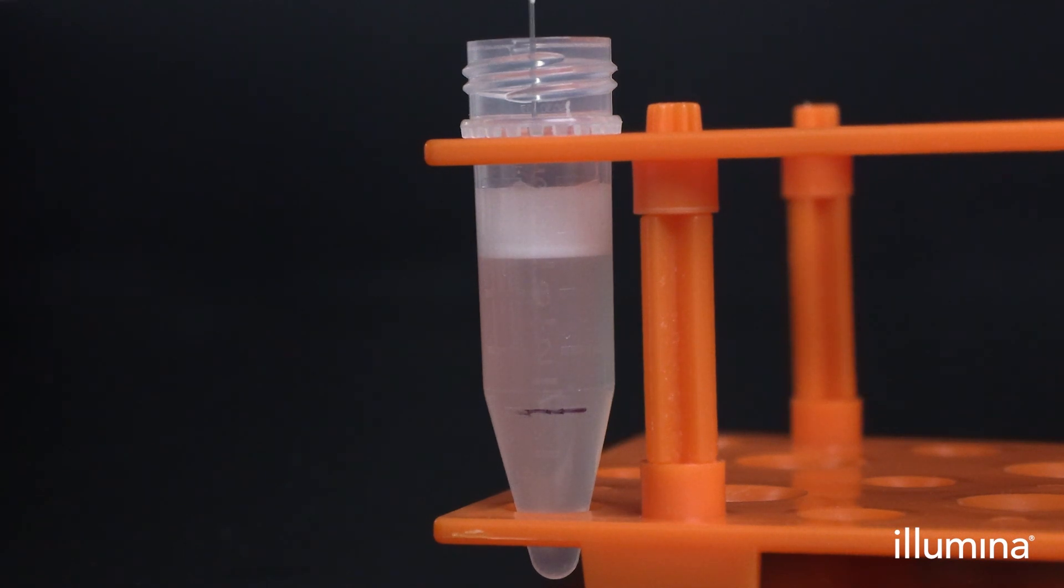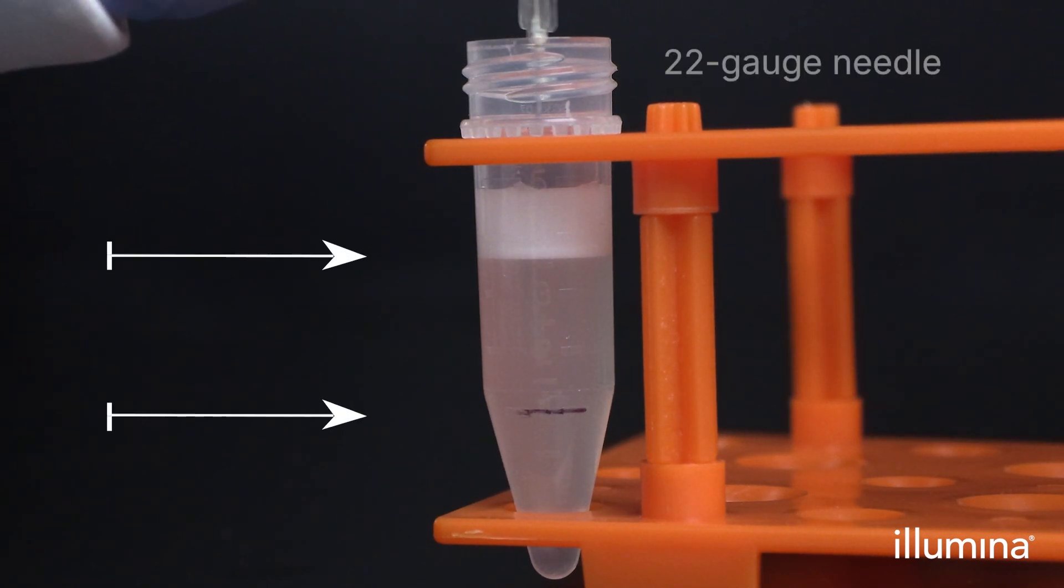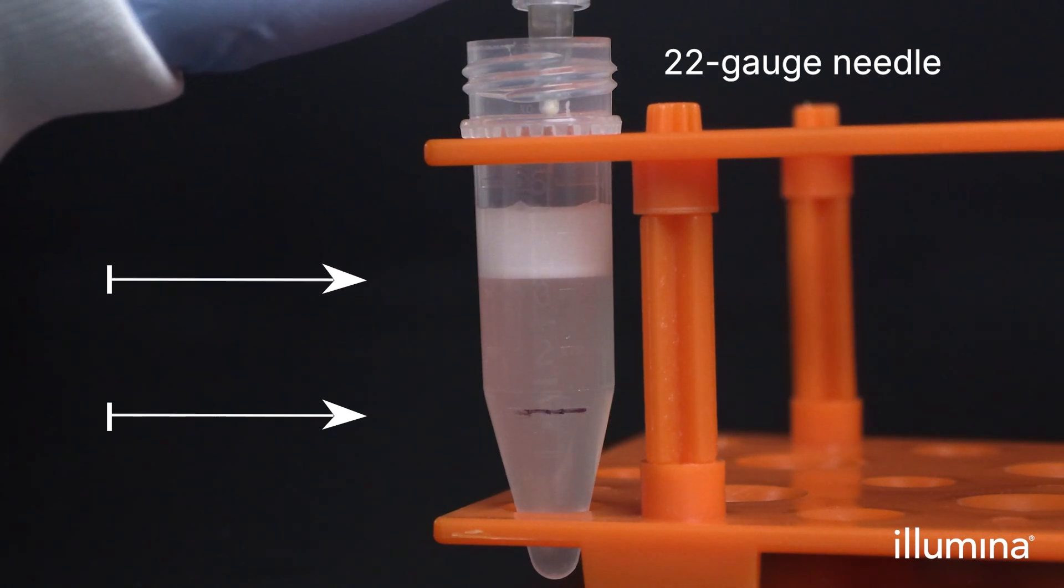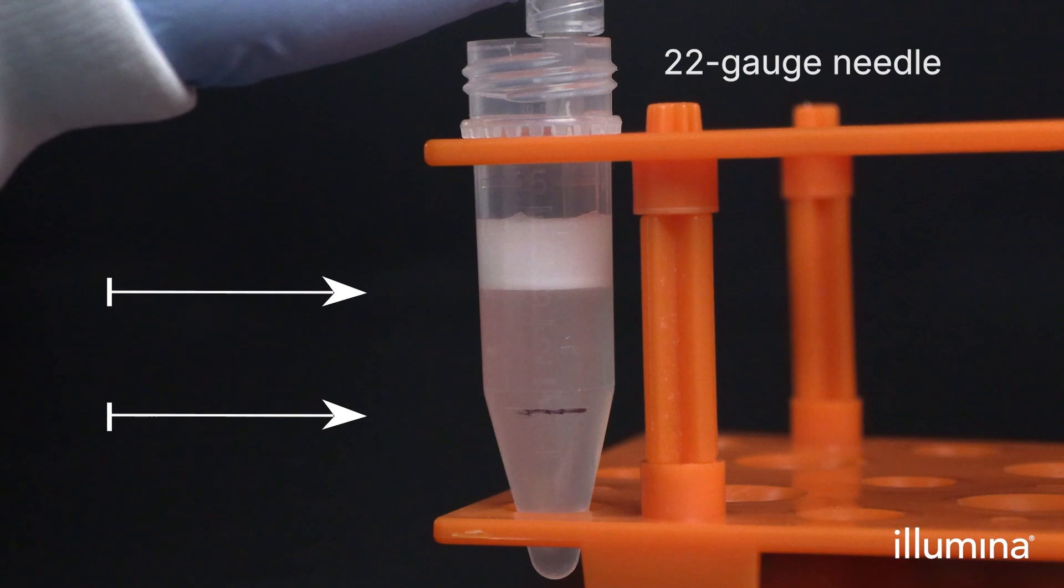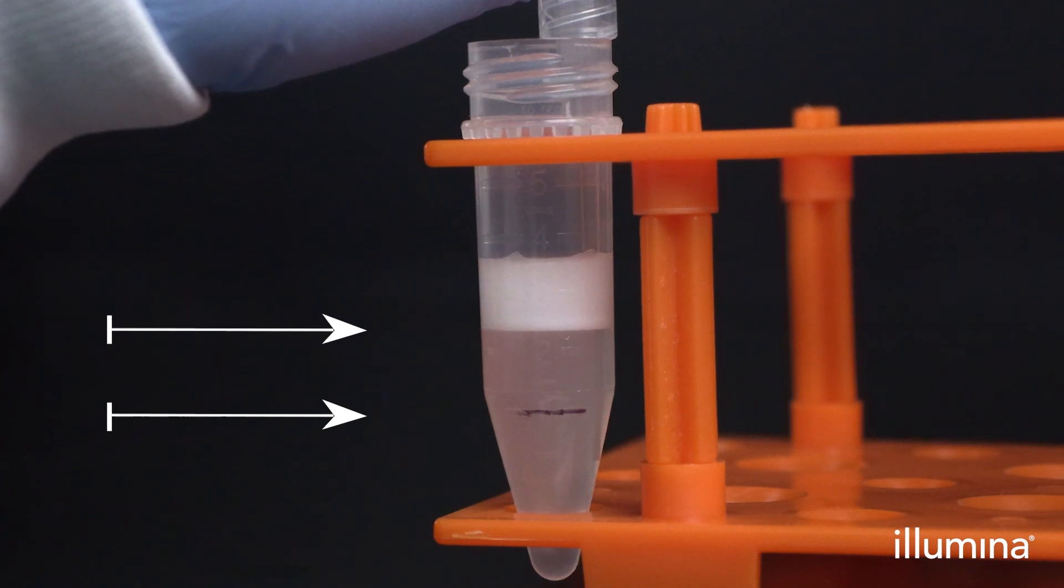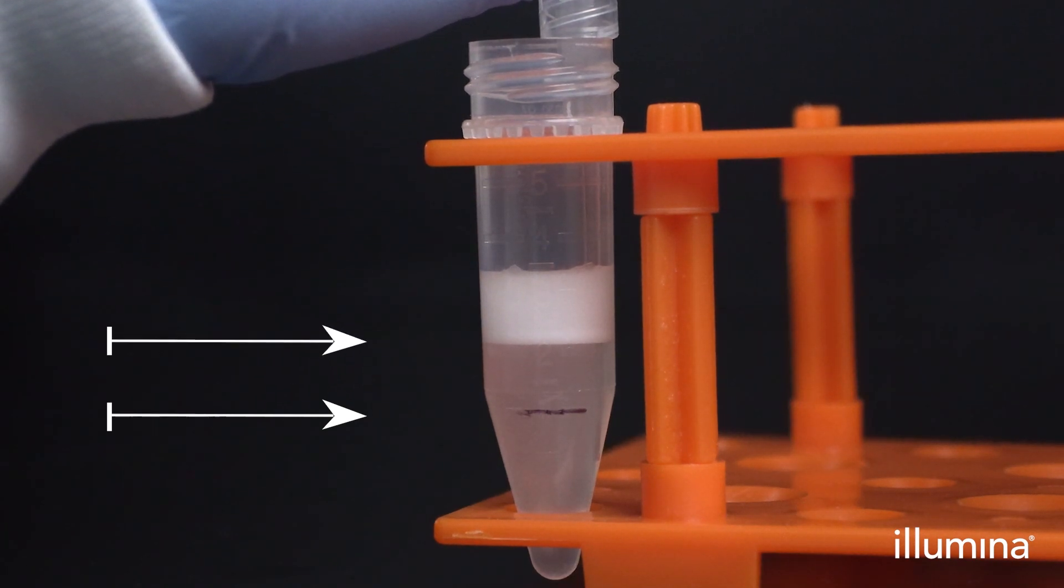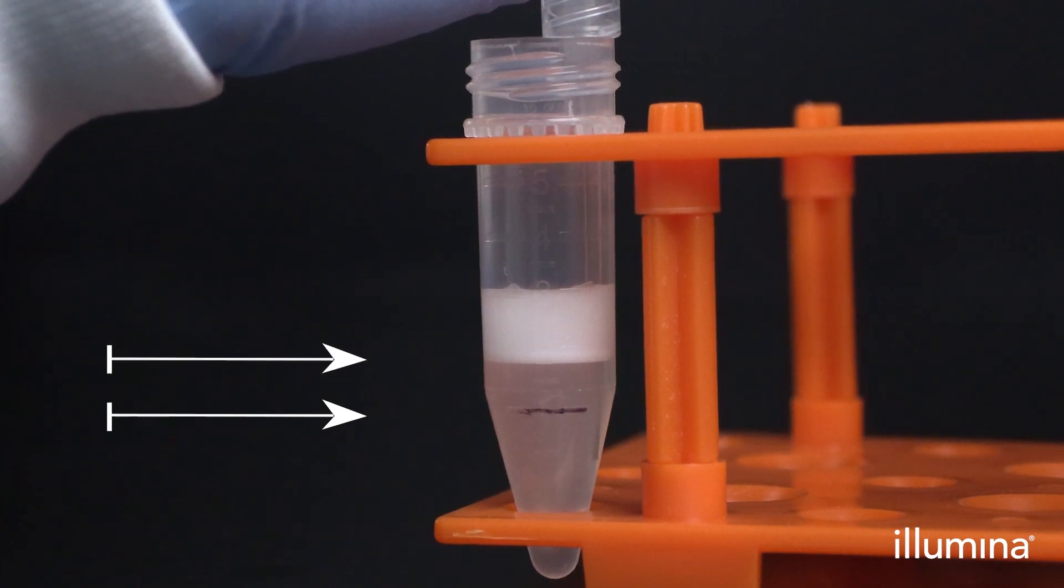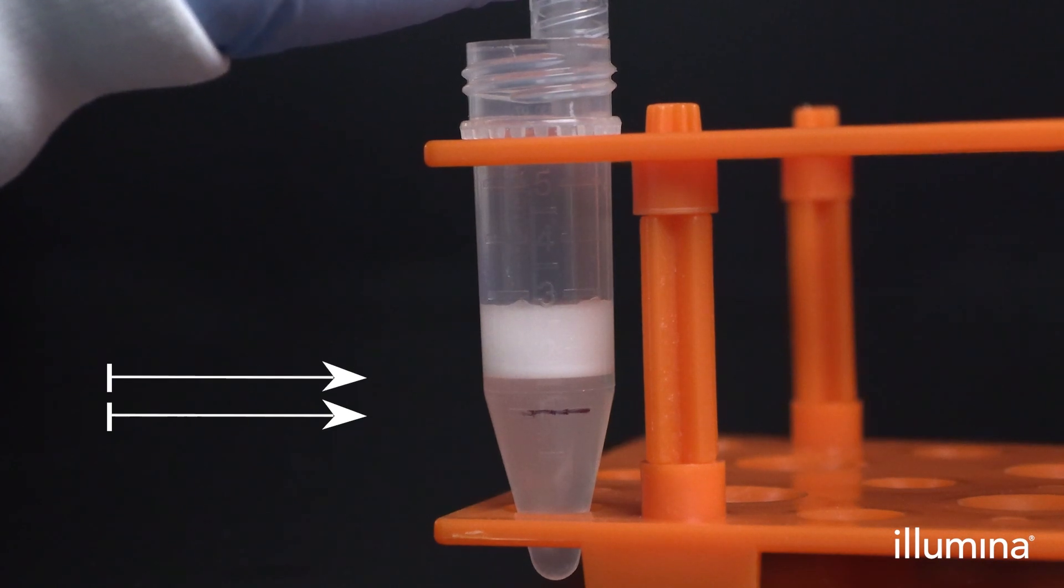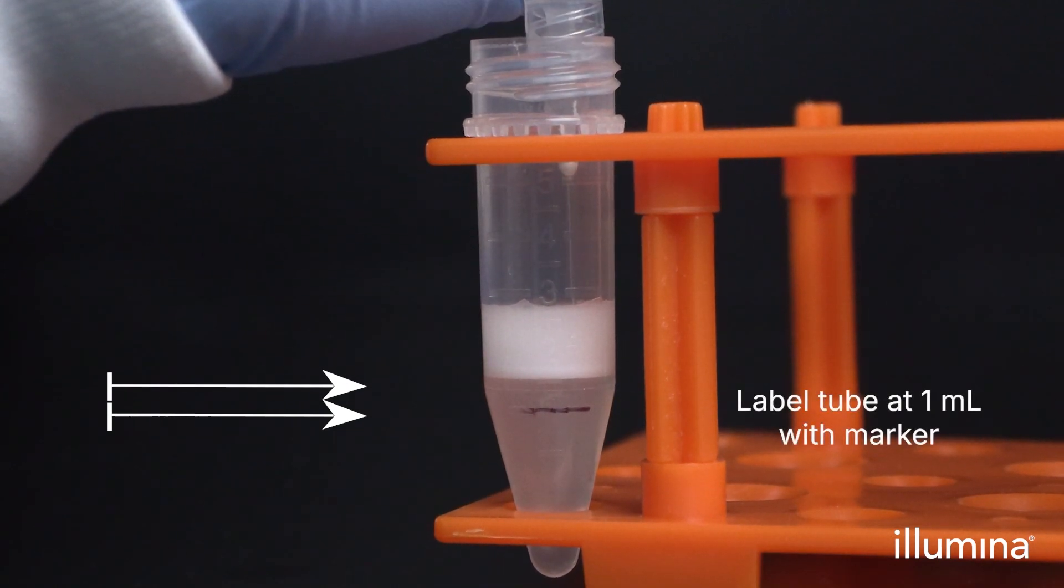After letting the emulsion stabilize for at least 1 minute, remove the excess partitioning reagent from the bottom of the tube so there is room to add the chemical lysis emulsion. Slowly pierce through the emulsion to the bottom of the tube. Wait 5 seconds, then using a 3 ml syringe with G22 blunt bottom needle, aspirate out the excess partitioning reagent until the bottom of the PIPs plus cells emulsion is resting at the 1 ml volume marker of the 5 ml tube.